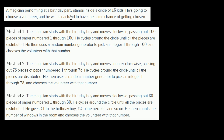A magician performing at a birthday party stands inside a circle of 15 kids. He's going to choose a volunteer, and he wants each kid to have the same chance of getting chosen. We have three methods by which he can do it. Let's think about whether each of these methods are fair, where each kid has the same chance of getting chosen, and if not, think about why.